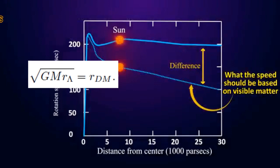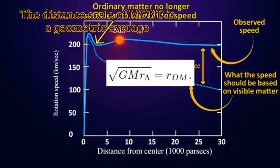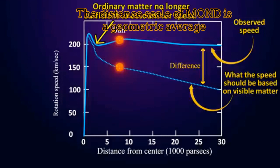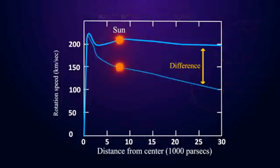The second interesting fact is that when we translate the acceleration scale to a distance scale, what we obtain is the geometric average between the gravitational radius scale and the cosmological constant scale.